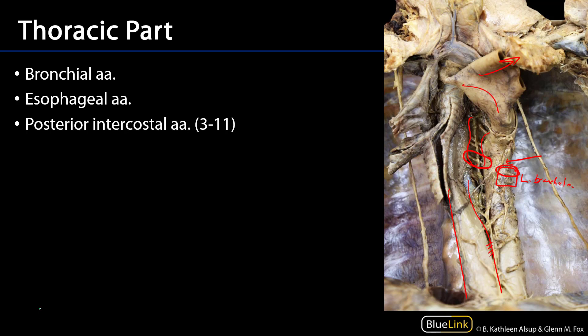One last structure on our list: we can see the thoracic duct ascending here in the posterior mediastinum as it transitions into the superior mediastinum. So these are the major arteries and branches of the posterior mediastinum. Thank you very much for your time.